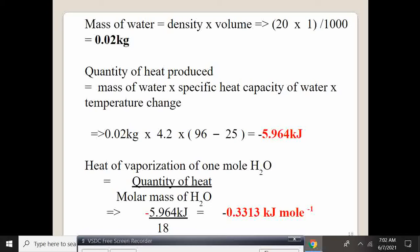For us to get the quantity of heat produced, that is the mass times specific heat capacity of water times the temperature change. Temperature change is going to be 96 minus 25.